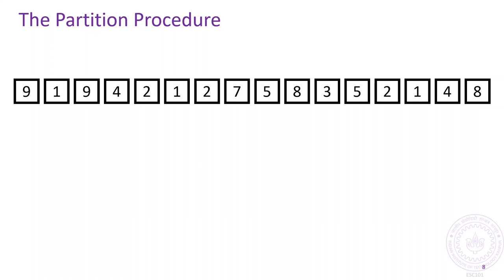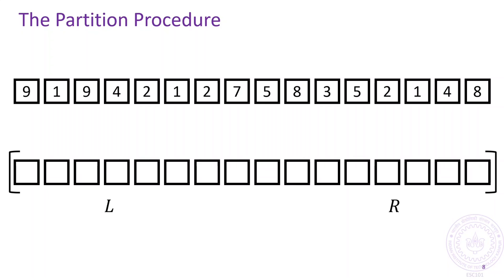So, let us look at the partitioning algorithm at work. Here is our original unsorted array and here is the blank array which will eventually contain the partitioned array. Initially, our active region is the entire blank array and let's say our pivot is 4. Note that 4 appears twice in the array.